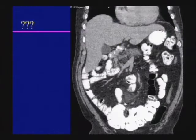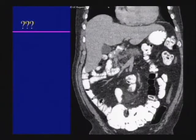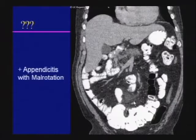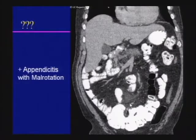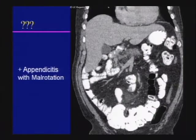You may see atypical presentations of appendicitis. In this case, there is stranding in the pelvis close to the ileocecal valve, but the cecum is malrotated and lying in the pelvis. This is a patient with acute appendicitis and malrotation. Be aware that you can have pain in the left upper quadrant or in the pelvis depending upon how the cecum is rotated, and you should look for the cecum and ileocecal valve in all cases of appendicitis.